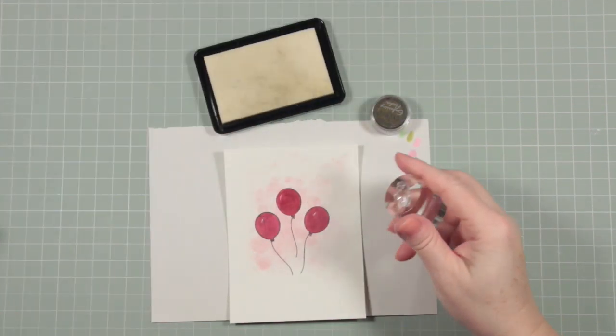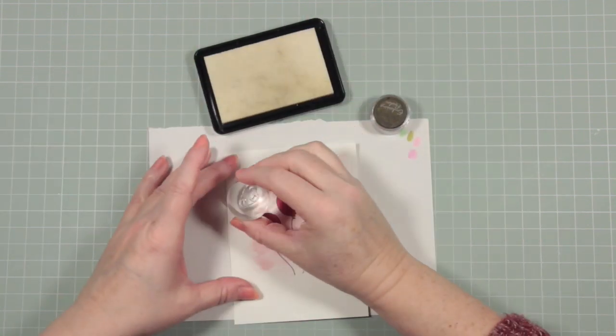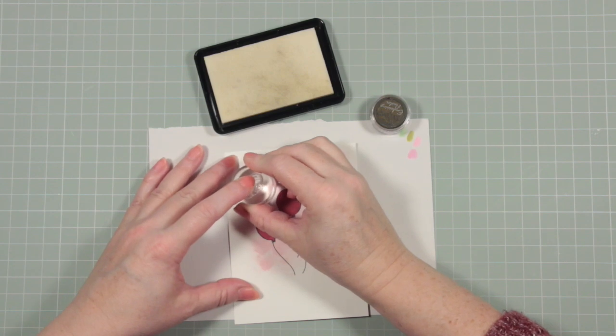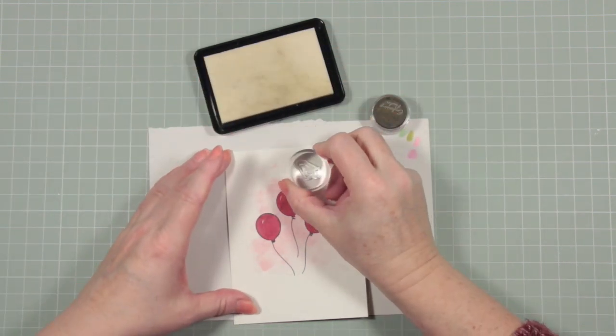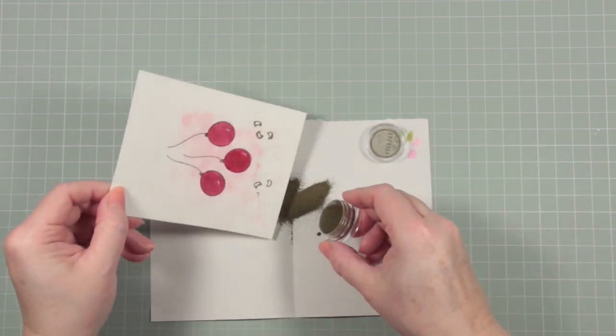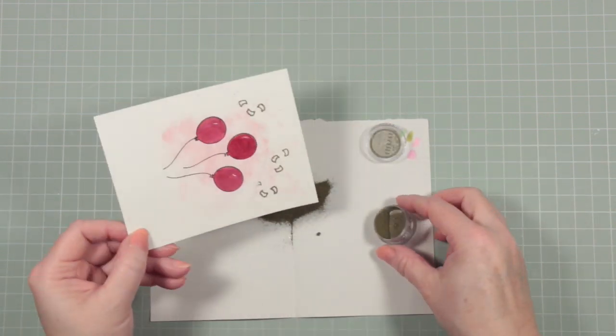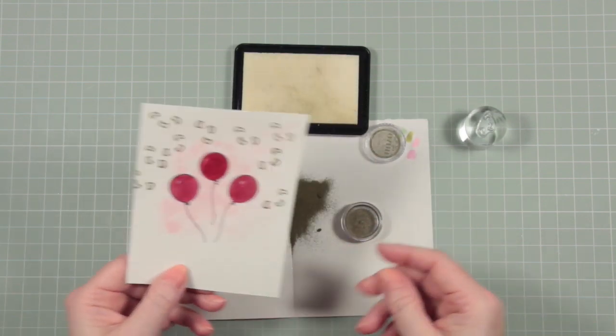Now I have some clear embossing ink and I've taken one of the stamps from the kit that has the pieces of paper that look as if they're fluttering all around. I'm going to stamp these around the top half of my card, especially around the balloons. That would be much easier for you to see as I sprinkle my gold embossing powder over where I've stamped, and I'm going to heat set these using my heat tool.